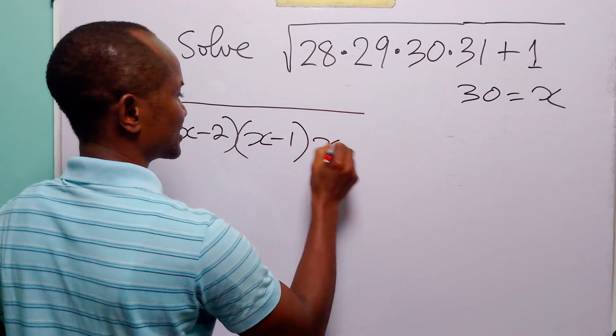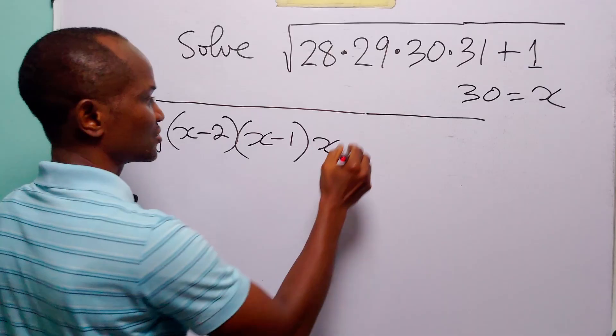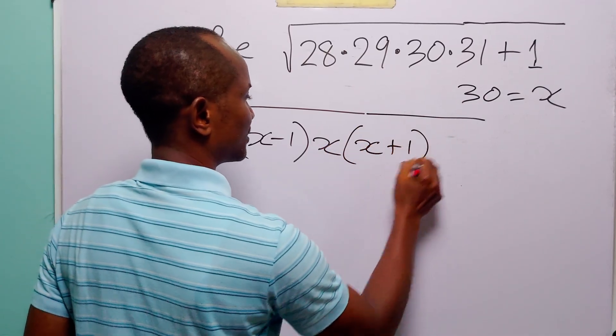Of course we have x which is 30. 31 is 30 plus 1, so here we have x plus 1.